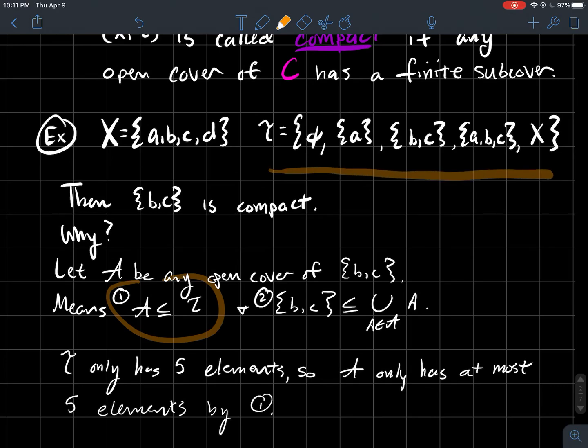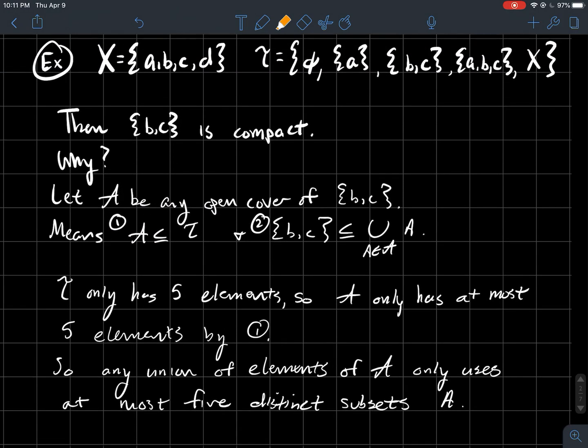Now think about part one. T only has five things in it. Therefore, any subset of T has at most five things in it. So what does that tell me? Also, the union of elements from fancy A. I'm only taking unions where I'm only using at most five distinct different subsets.